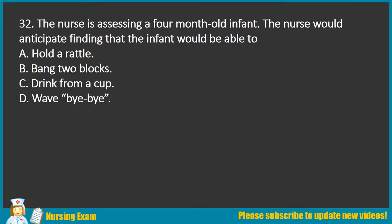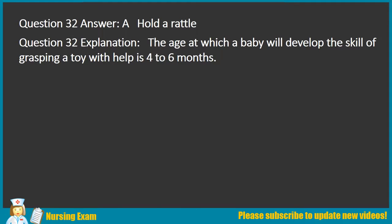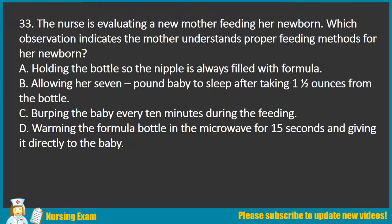Question 32. The nurse is assessing a 4-month-old infant. The nurse would anticipate finding that the infant would be able to: A. Hold a rattle. B. Bang 2 blocks. C. Drink from a cup. D. Wave bye-bye. Answer: A. Hold a rattle. Explanation: The age at which a baby will develop the skill of grasping a toy with help is 4–6 months.